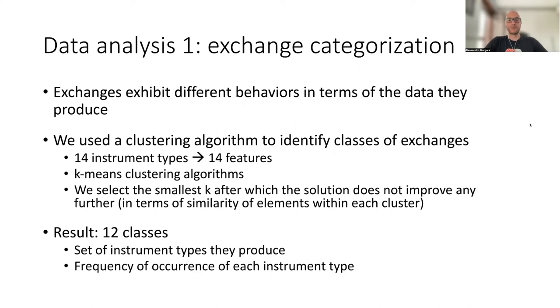As a result, we obtained 12 classes of similar exchanges, and for each class we derive the set of instruments that they produce. Some of them produce only one, or two, or very few types. And then, for classes with more than one type, we compute the frequency of occurrence of each instrument type.